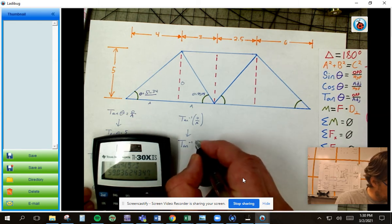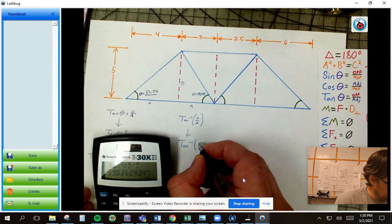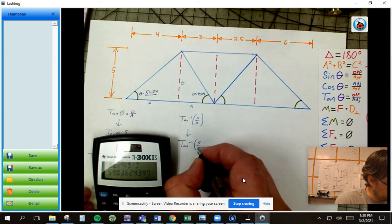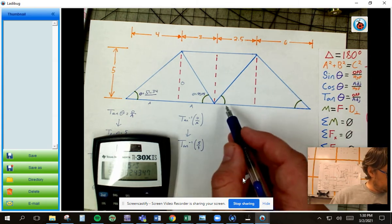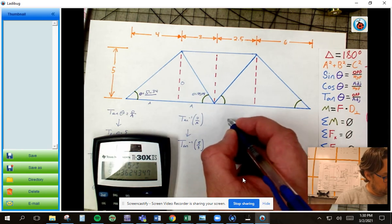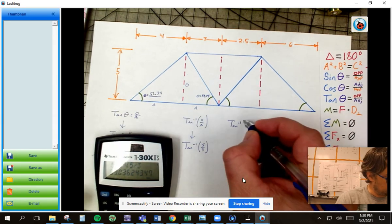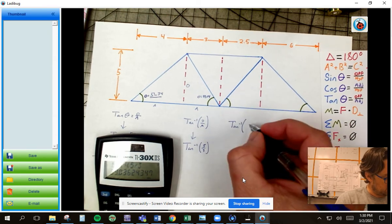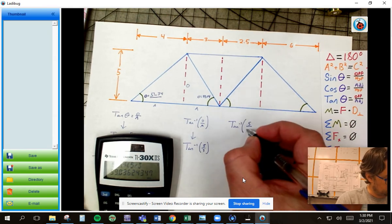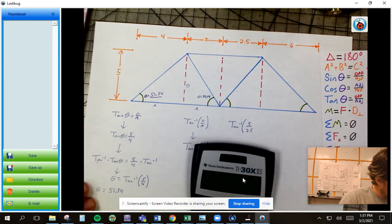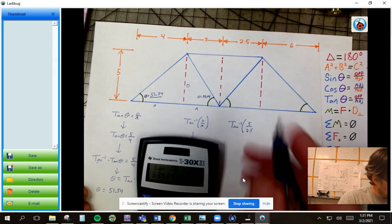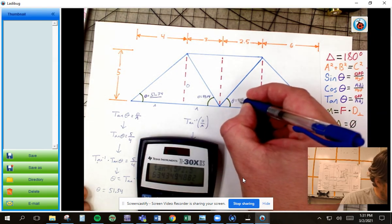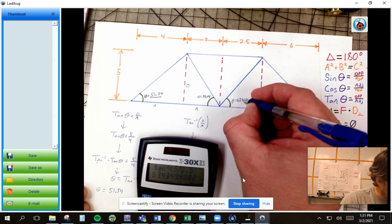I'll write that down. Tangent of theta is opposite, which was five over three. Next one, same thing again. Tangent inverse, opposite five over adjacent 2.5. And that gives us a theta here of 63.43.